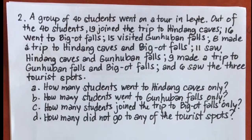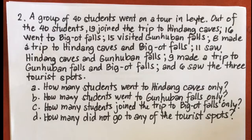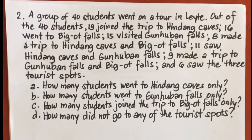Example number 2: a group of 40 students went on a tour in Leyte. Out of the 40 students, 19 joined the trip to Hindang Caves, 16 went to Bigot Falls, 15 visited Gunhuban Falls, 8 made the trip to Hindang Caves and Bigot Falls, 11 saw Hindang Caves and Gunhuban Falls, 9 made the trip to Gunhuban Falls and Bigot Falls, and 6 saw all 3 tourist spots. Questions: A. How many students went to Hindang Caves only? B. Went to Gunhuban Falls only? C. Bigot Falls only? D. How many did not go to any of the tour spots?